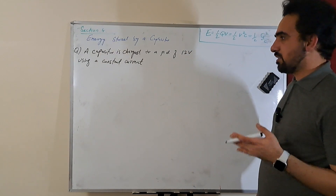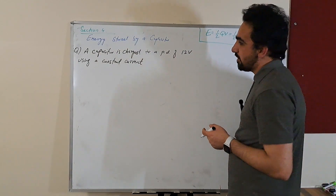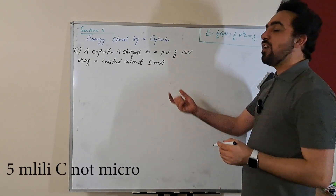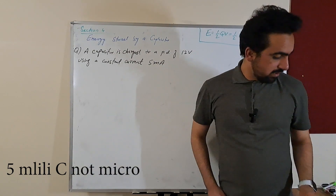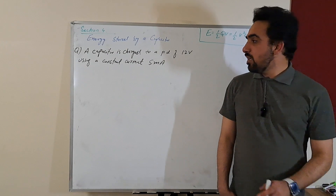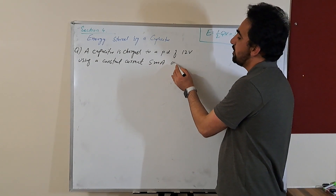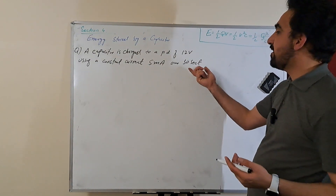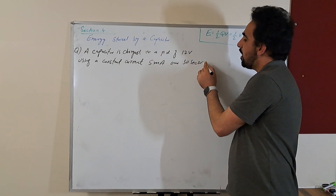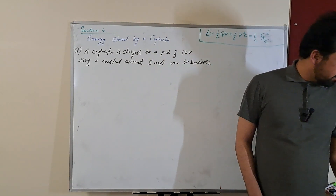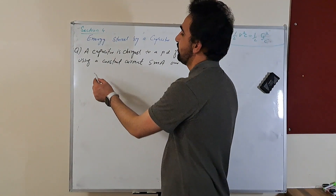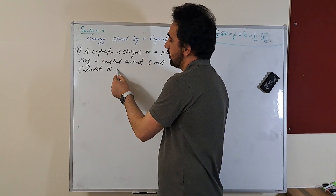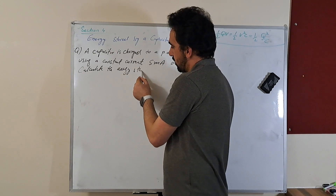Current is charge per unit time. So how much charge is being provided? The constant current is 5 milliamps over 30 seconds. So we got current and time — from current and time we can figure out our charge. Calculate the energy stored in it.